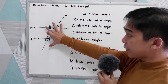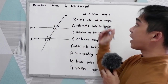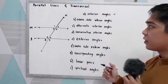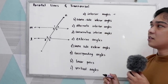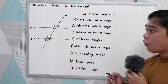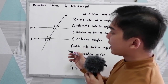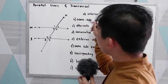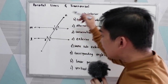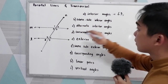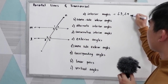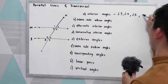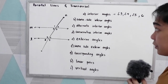Now using this illustration, we're going to find the interior angles. Interior, from the word itself, means inside. These are the angles formed by the parallel line and the transversal. So our interior angles are angle 3, angle 4, angle 5, and angle 6.